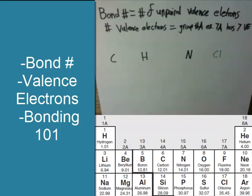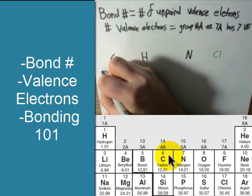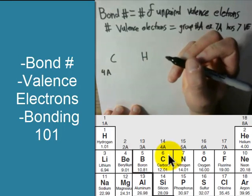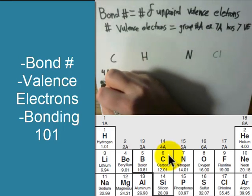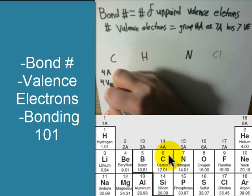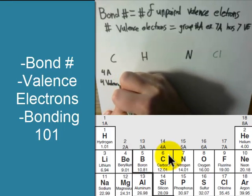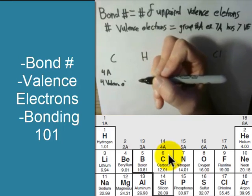So first example we've got here is carbon. Carbon is in group 4A, which is right here, so there's carbon. So in group 4A, so 4A means it has four valence electrons.